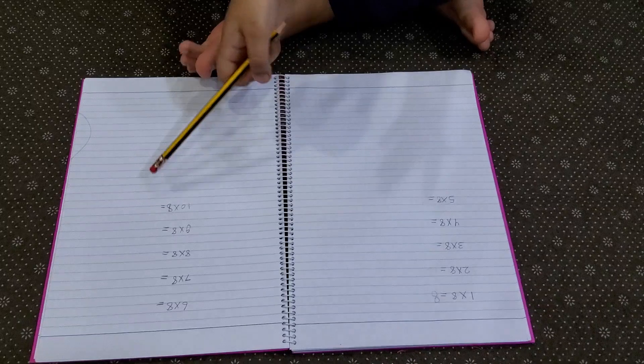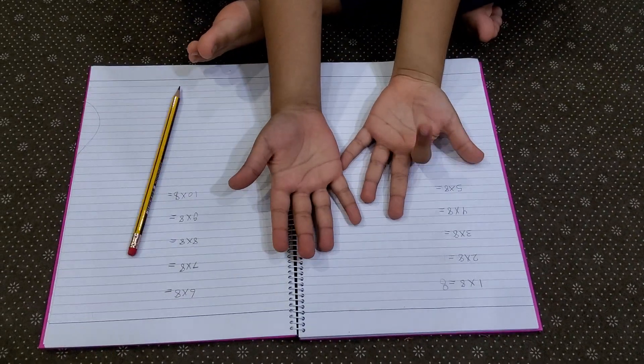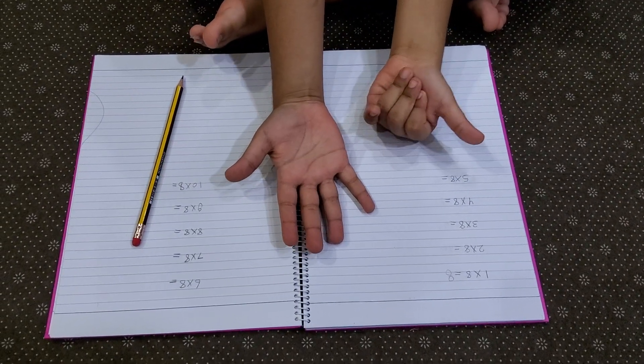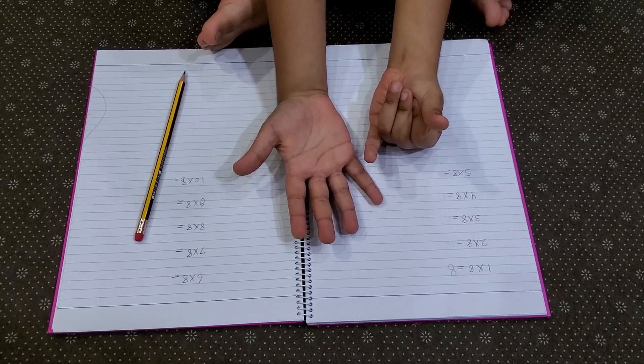Then eight multiplied by two. So we bend number two and two fingers after it. So it's going to be sixteen.